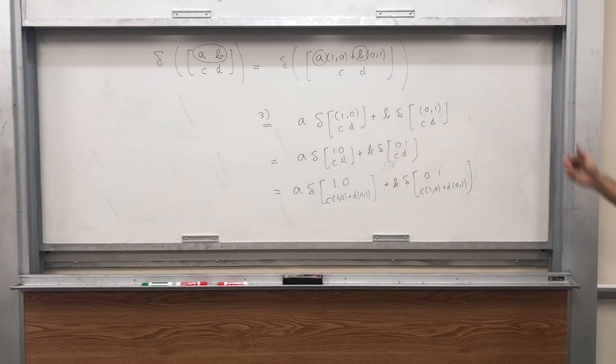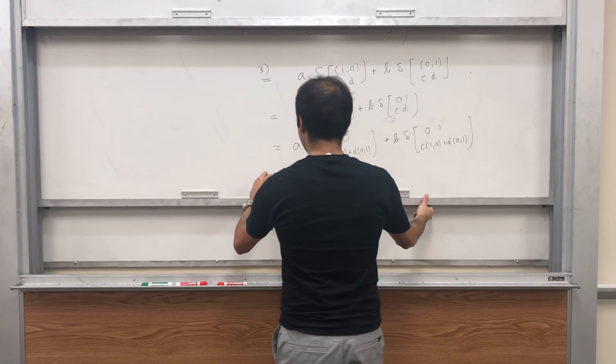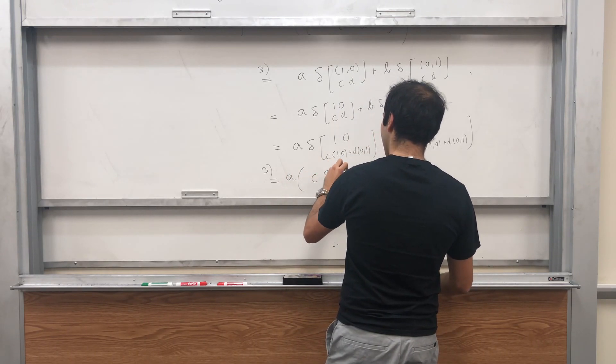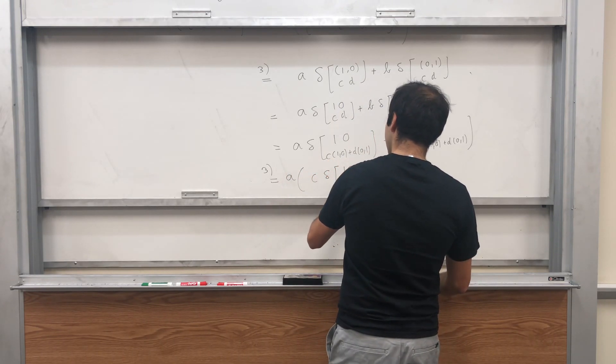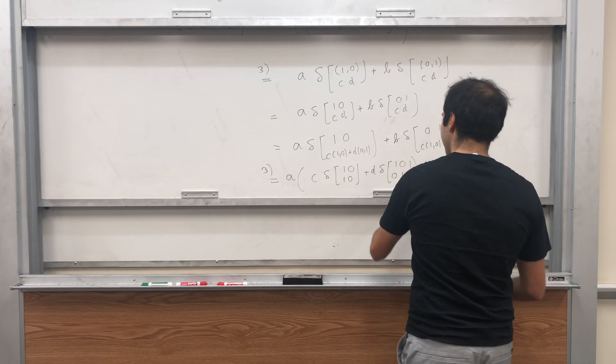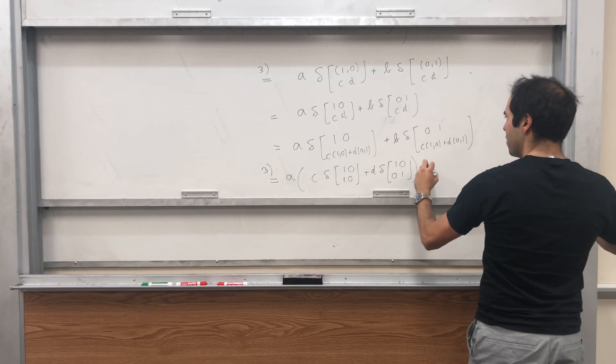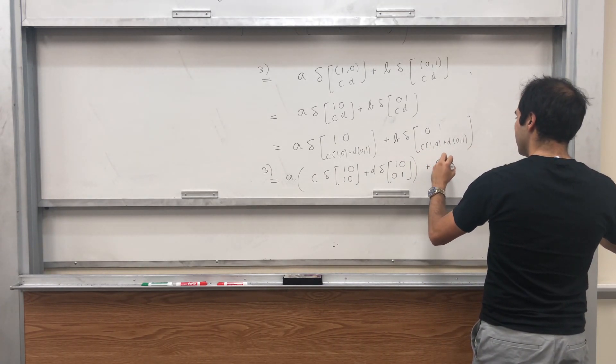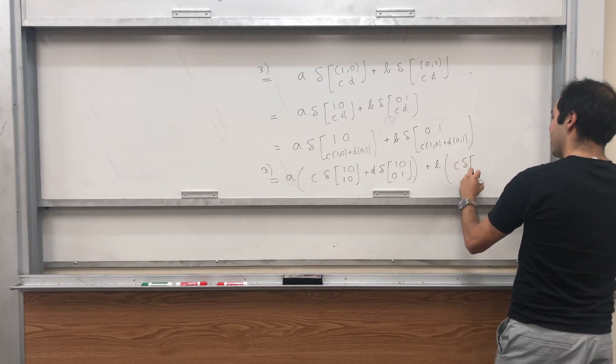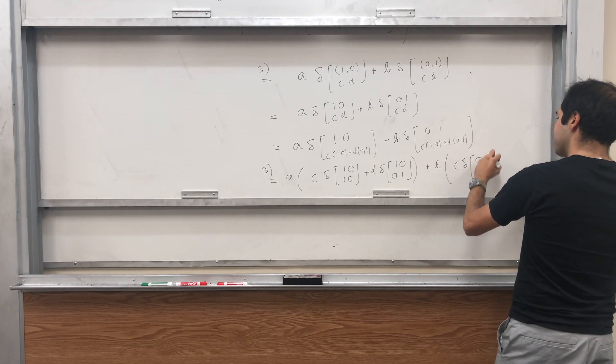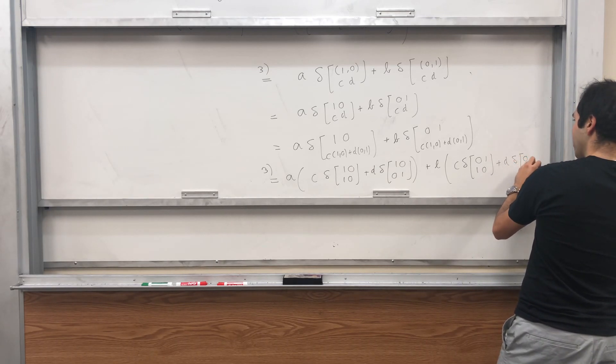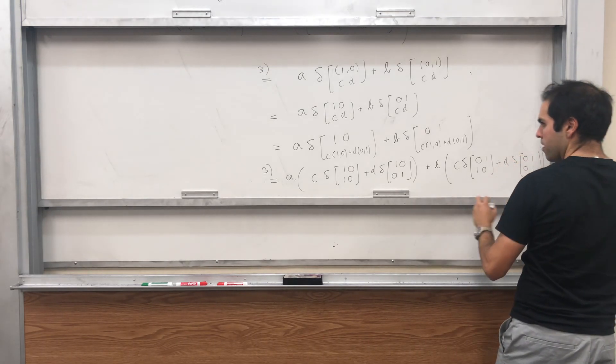Let's just use multilinearity again. What we get is A times C delta of 1, 0, 1, 0 plus A times D times delta of 1, 0, 0, 1, plus B times C delta of 0, 1, 1, 0, plus B times D times delta of 0, 1, 0, 1.